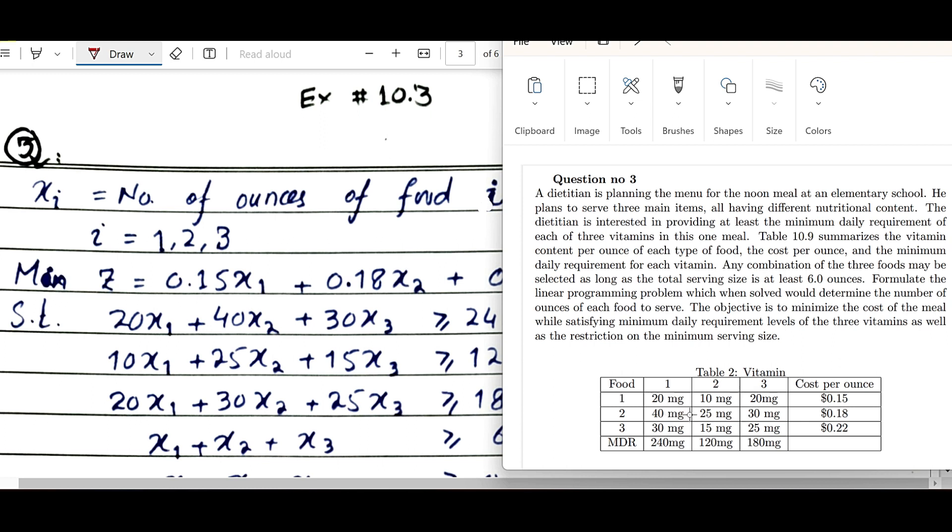Similarly, food two contains how many mg of vitamins one, two, and three per ounce, and its cost is given as 0.18 dollars. Similarly, food three contains 30, 15, 25 mg of vitamins, and its per ounce cost is given as 0.22 dollars.